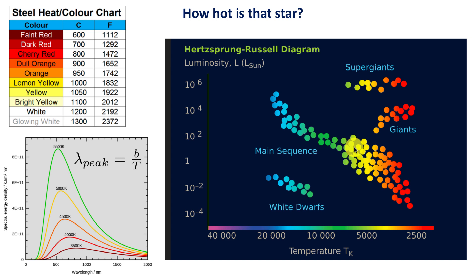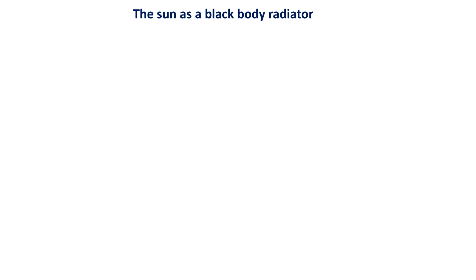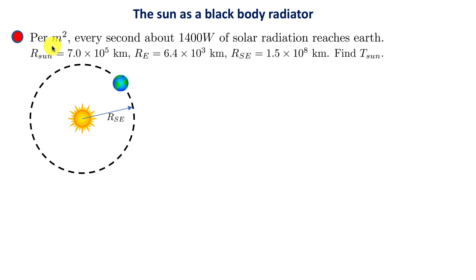Let's look at our sun in more detail, assuming it is a perfectly black body radiator — a good assumption to about 99%. Given that 1,400 watts of solar radiation per square meter reaches the earth, we want to find the temperature of the sun. The radius of the sun is 7 times 10 to the 5 kilometers, the radius of the earth is 6.4 times 10 to the 3 kilometers — about 100 times smaller — and the distance from the sun to the earth is 1.5 times 10 to the 8 kilometers.